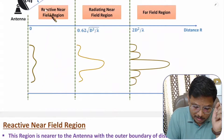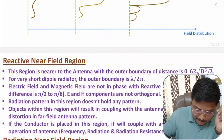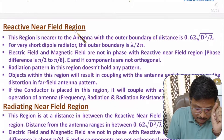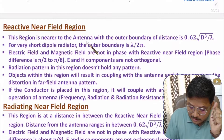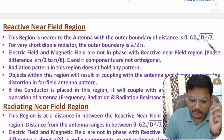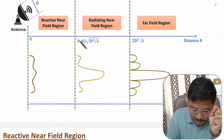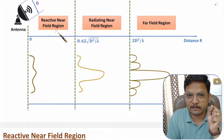Let us start with the first region: reactive near field region. This is the region from 0 distance to 0.62√(d³/λ). If distance is within this range, we have the reactive near field region.